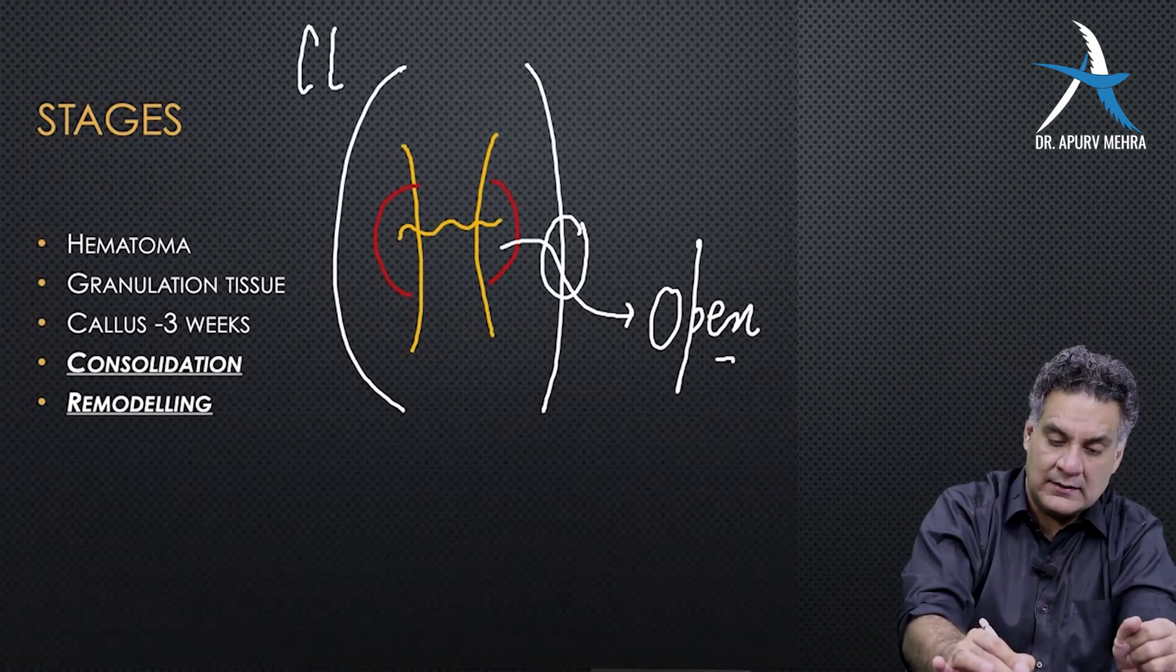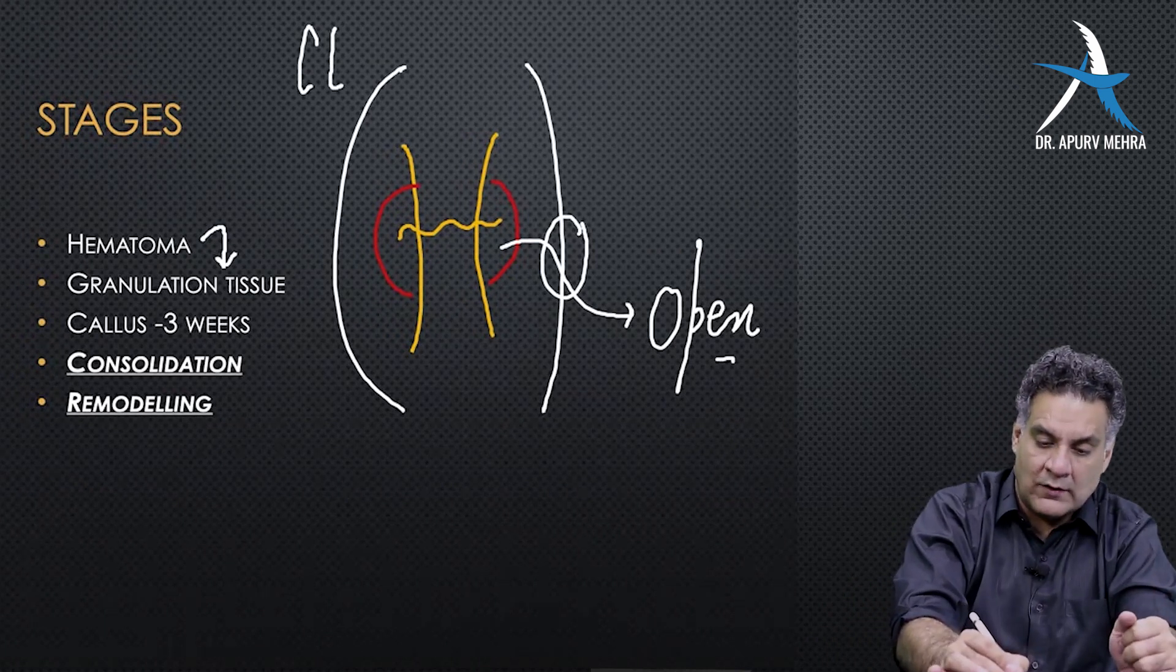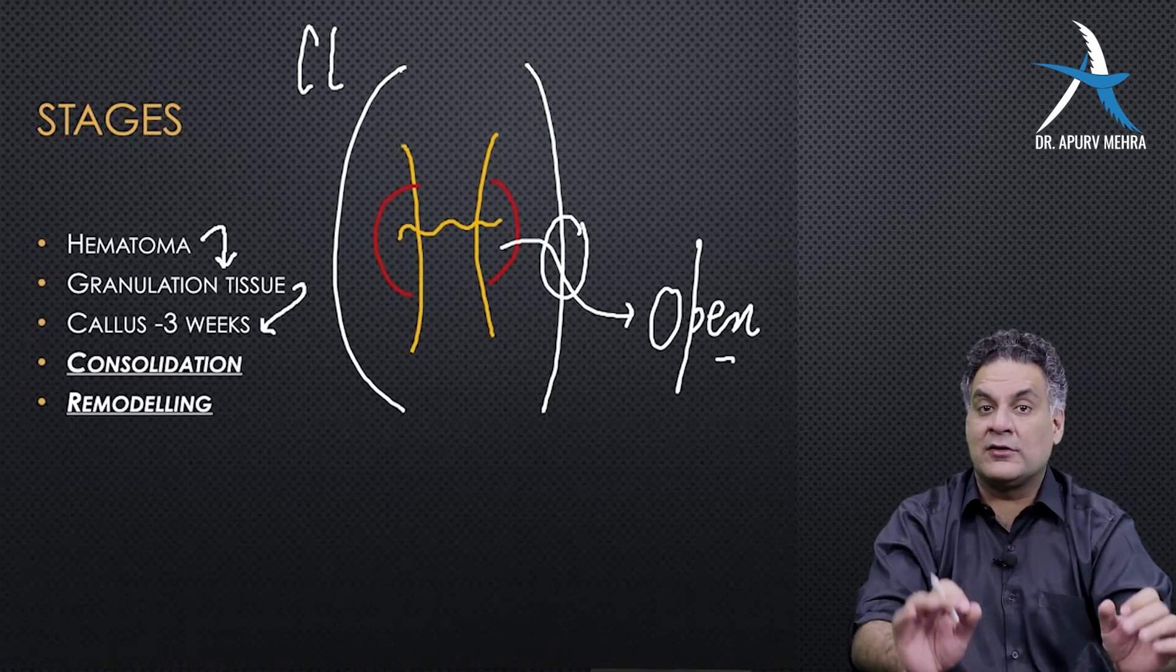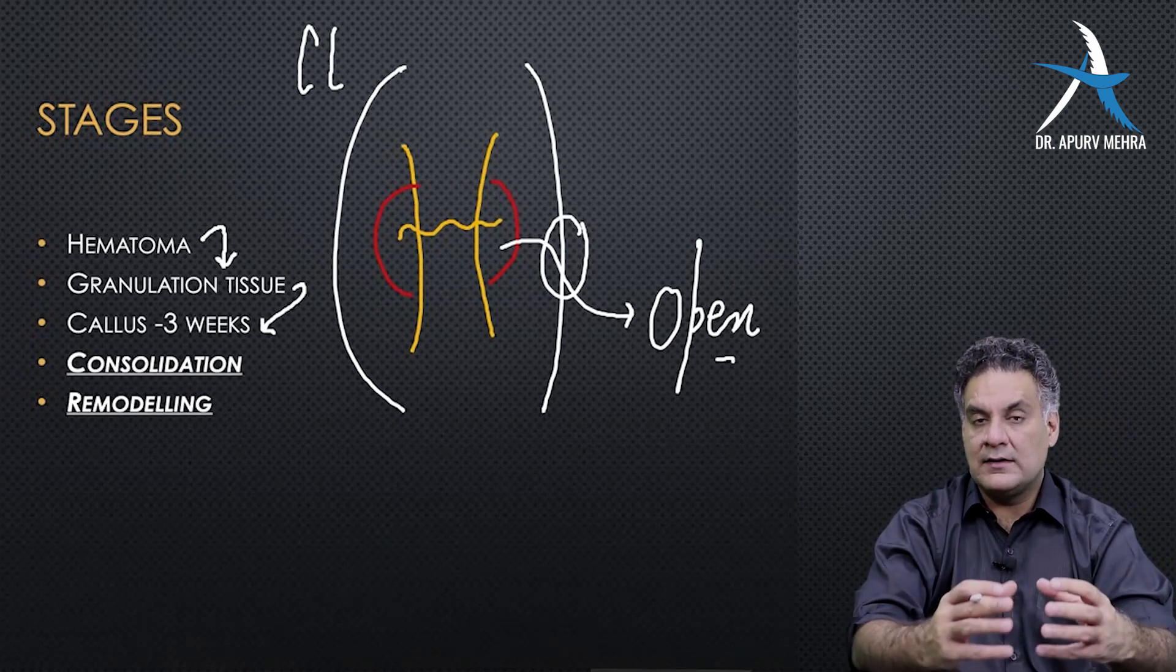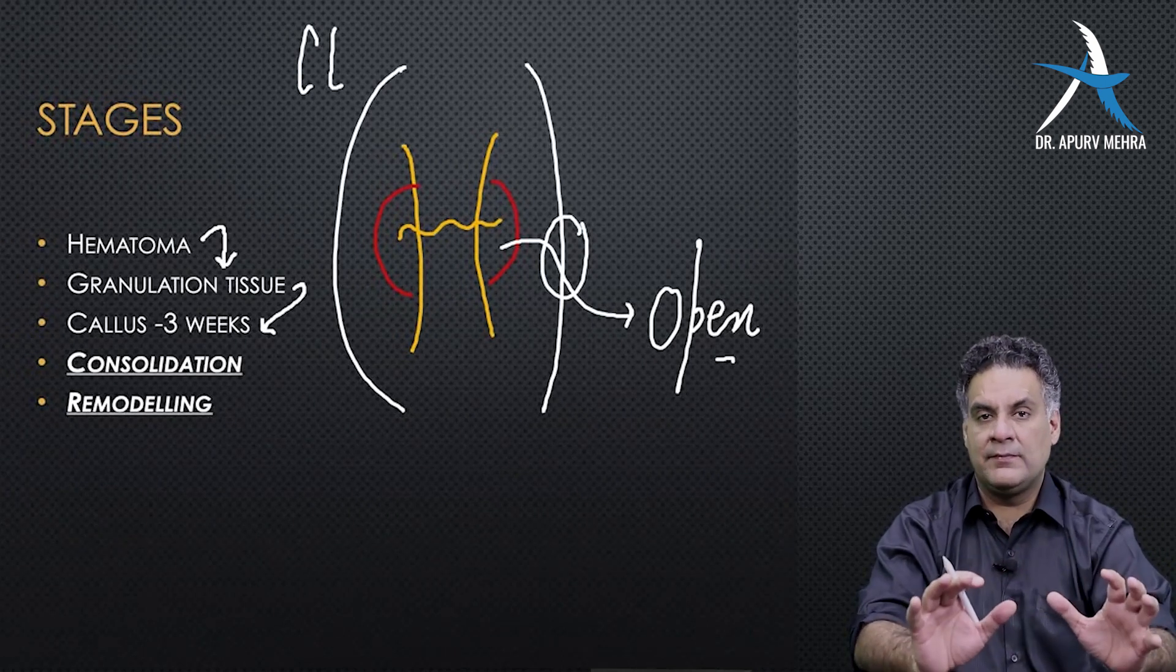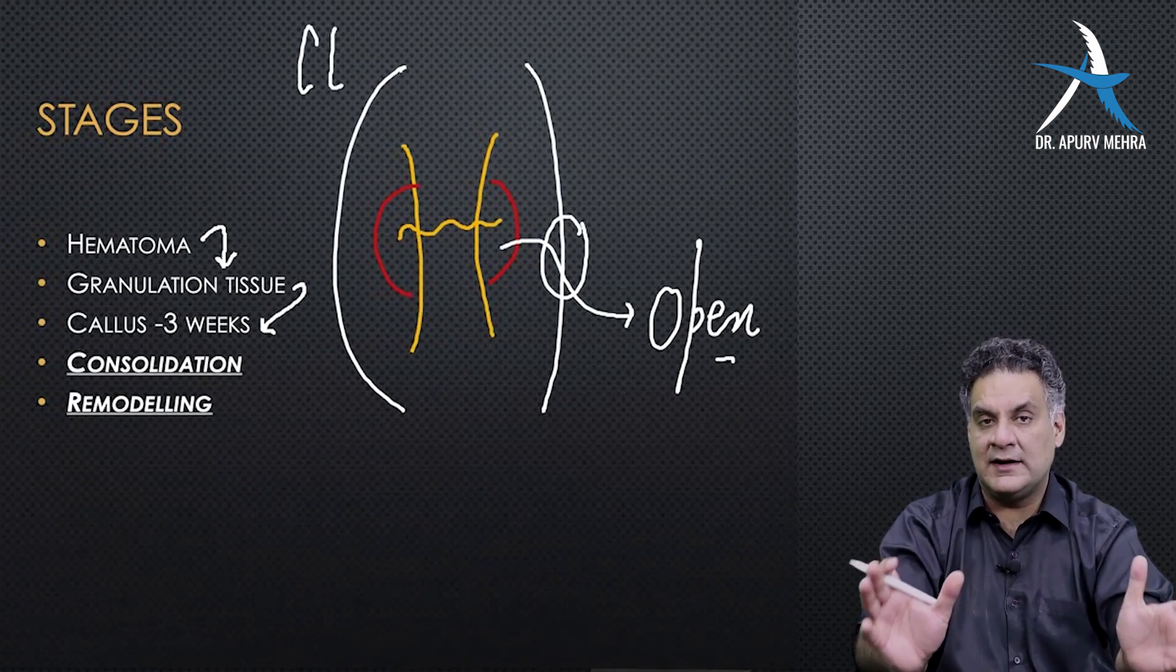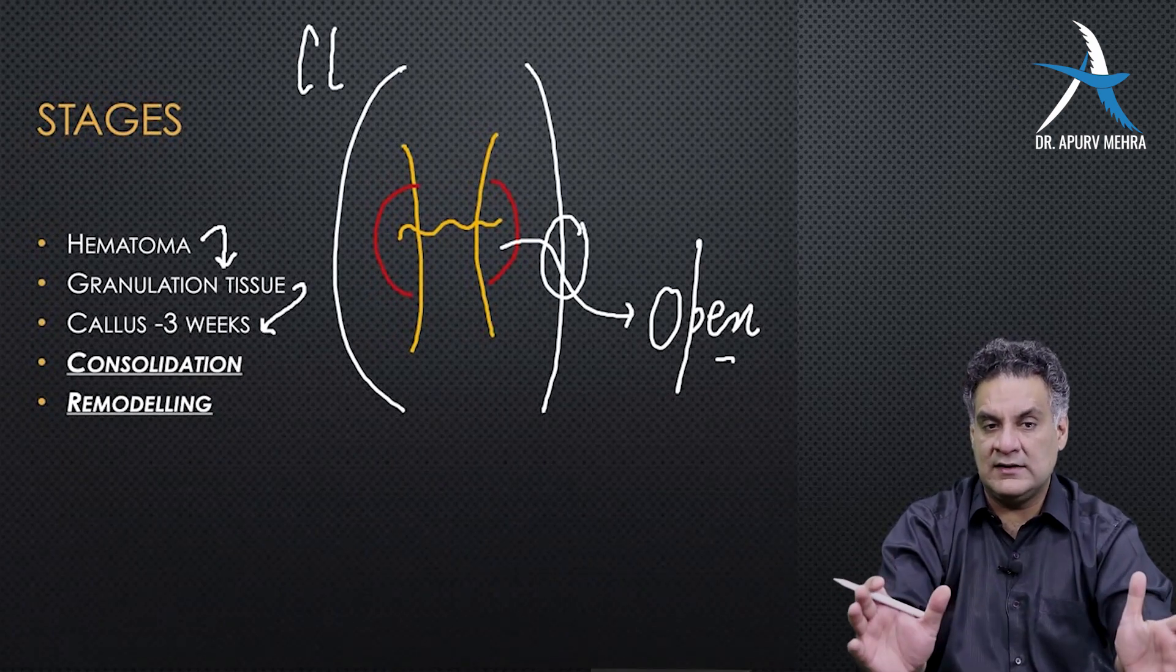On this hematoma, neovascularization occurs, and granulation tissue forms over which the immature bone or callus or soft callus forms. Callus is deformable but not displaceable. It is the earliest radiological feature that the bone has started uniting, seen around three weeks.